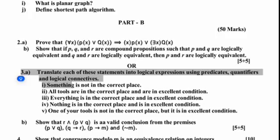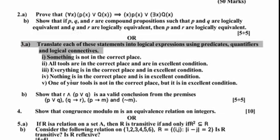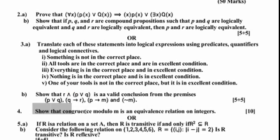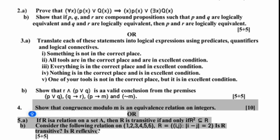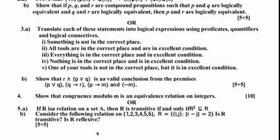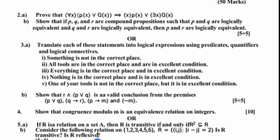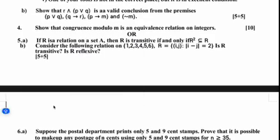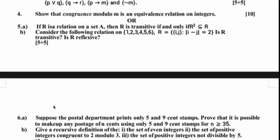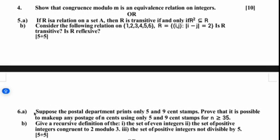For Unit 2, Question 4A: show that congruence modulo m is an equivalence relation on integers. A 10-mark question. Question 4B or 5: if R is a relation on set A, then R is transitive if and only if a given condition holds. Consider whether a given relation R is reflexive — such type of questions will definitely be asked in tomorrow's end examination. You can write answers from whichever unit you are most confident in.